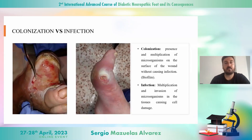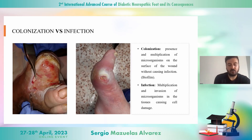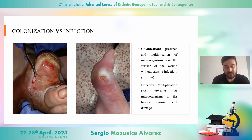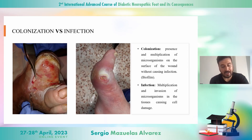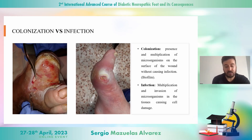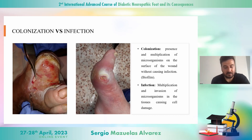When talking about infection, we should first know the difference between colonization and infection. Colonization is the adhesion and multiplication of microorganisms on the surface of the wound without causing infection, but causing biofilm, as you can see in the first image.